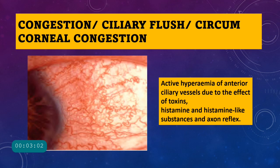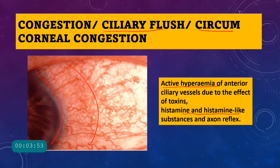The type of congestion or redness seen in uveitis is called ciliary flush, also called circumcorneal congestion, because it is present around the cornea. There will be active hyperemia of the anterior ciliary vessels in this zone. Toxins from inflammation cause dilatation of these vessels, producing circumcorneal congestion. It is very important to differentiate it from conjunctivitis.